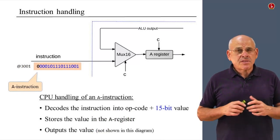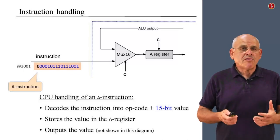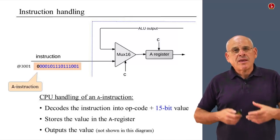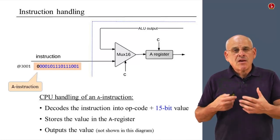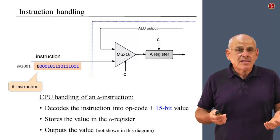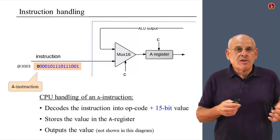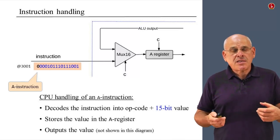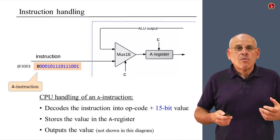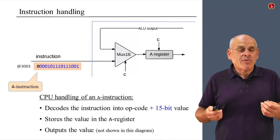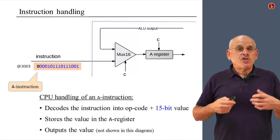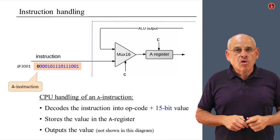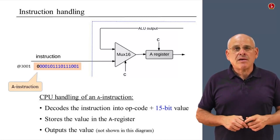Looking at the gate diagram, the A register can be fed not only from the instruction input but also from the ALU output. We have to decide: for an A instruction (opcode zero), we want input to come from the instruction; for a C instruction (opcode one), we want to route the A register's input from the ALU. It is the job of the CPU designer to inspect the opcode of the incoming instruction and decide from which source the A register will take its next contents.